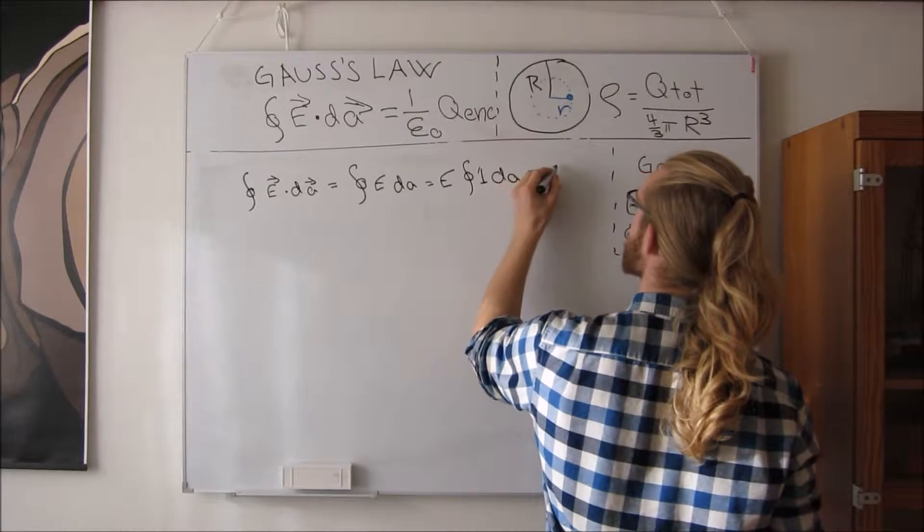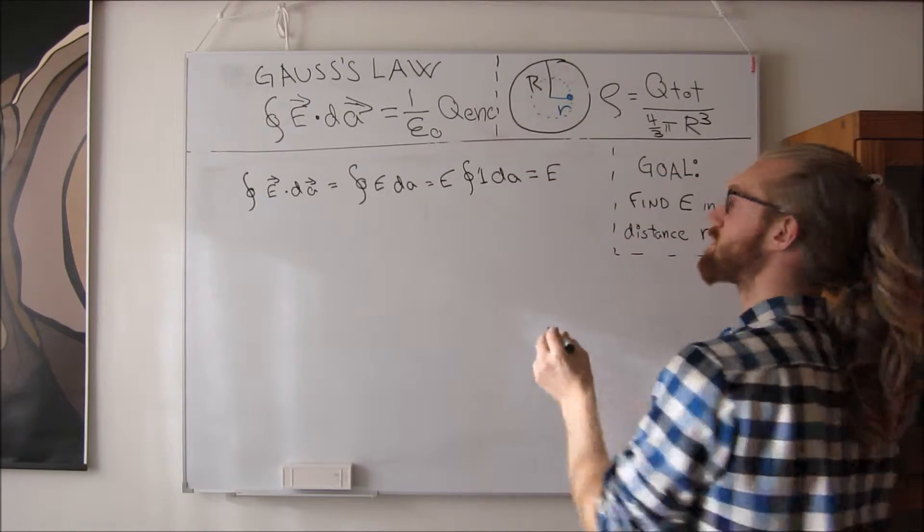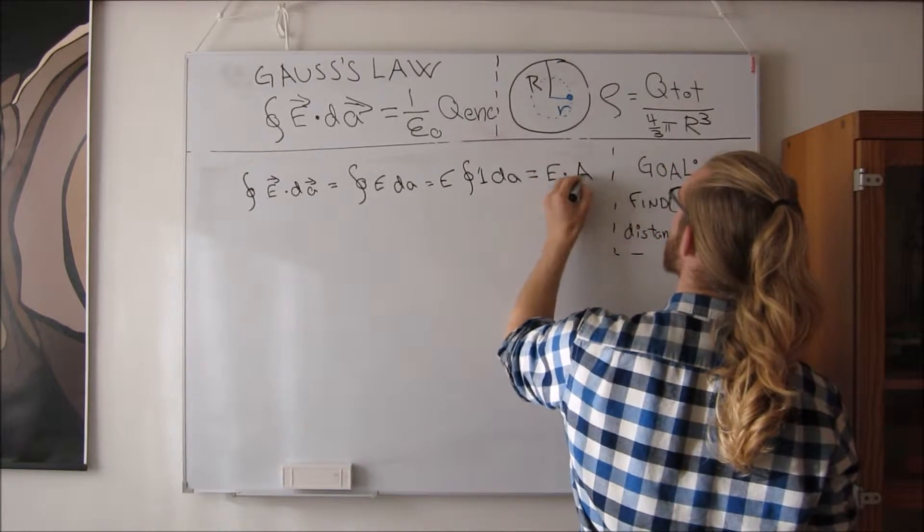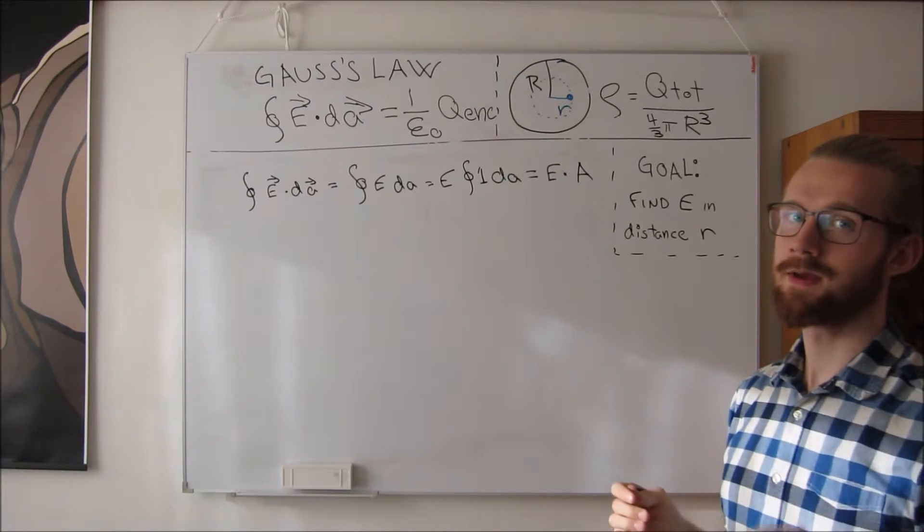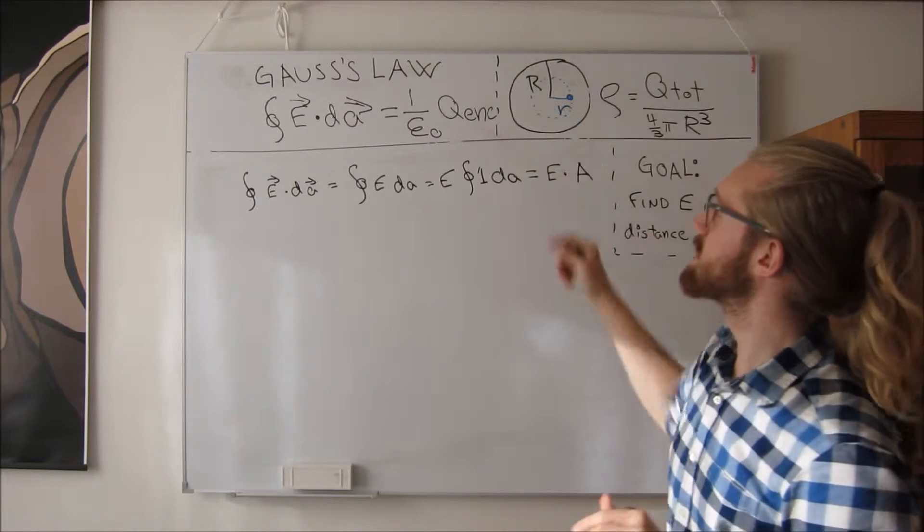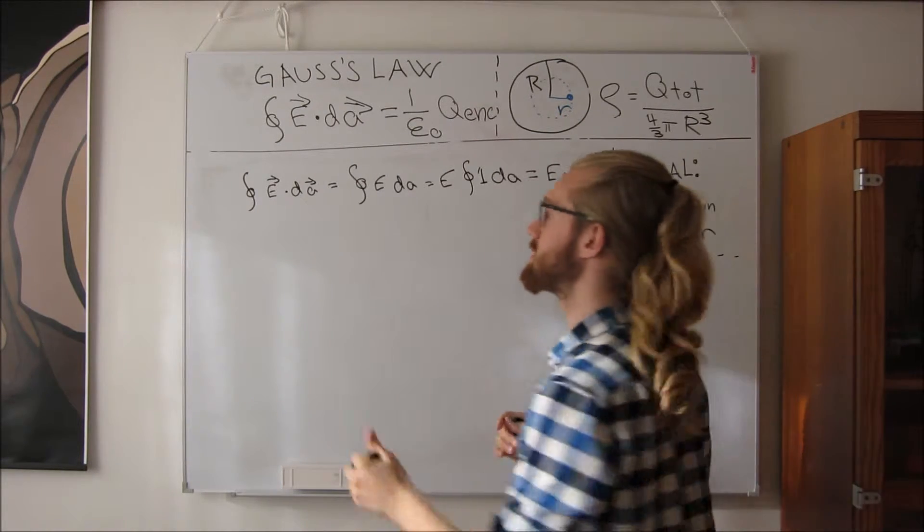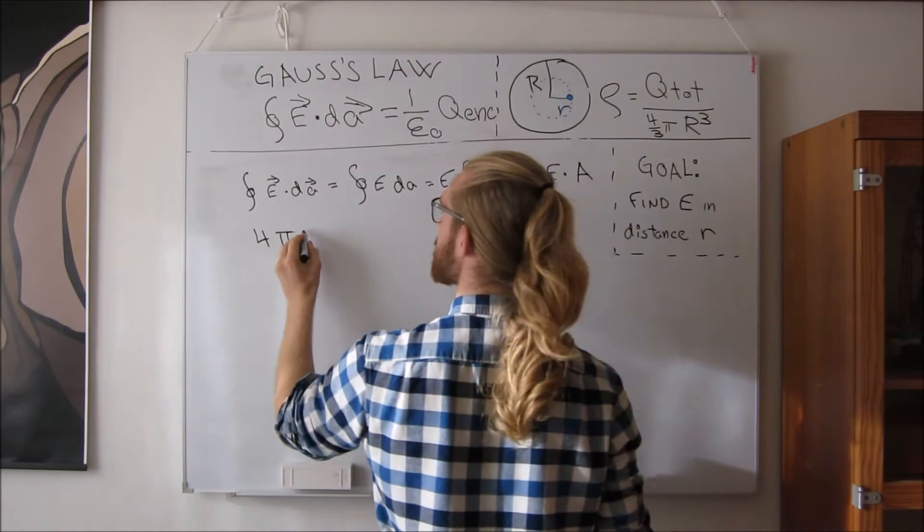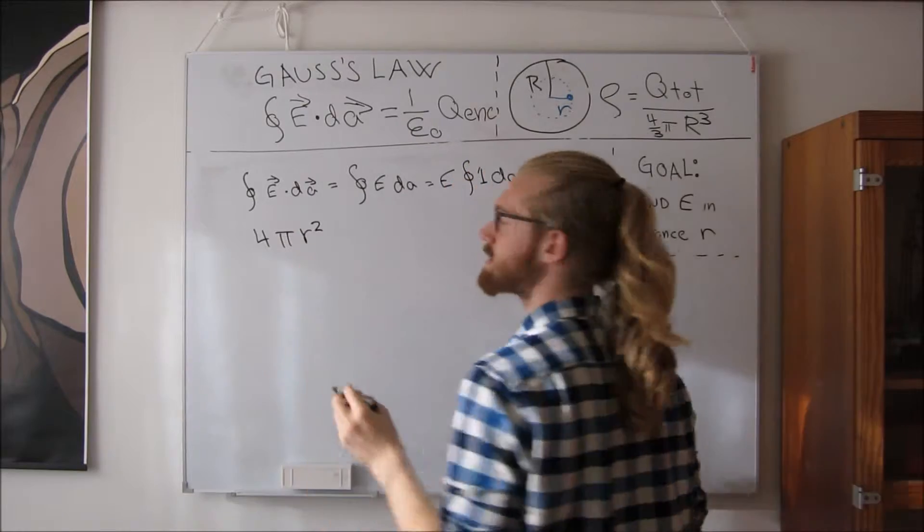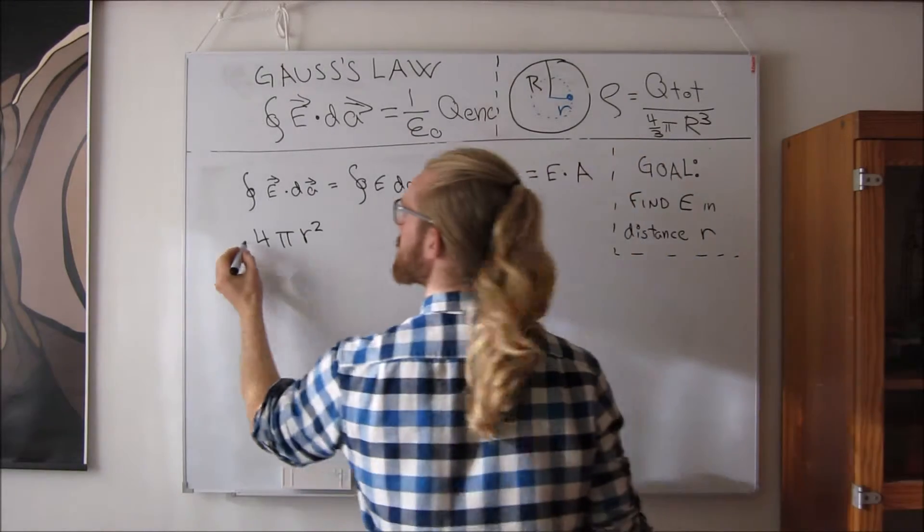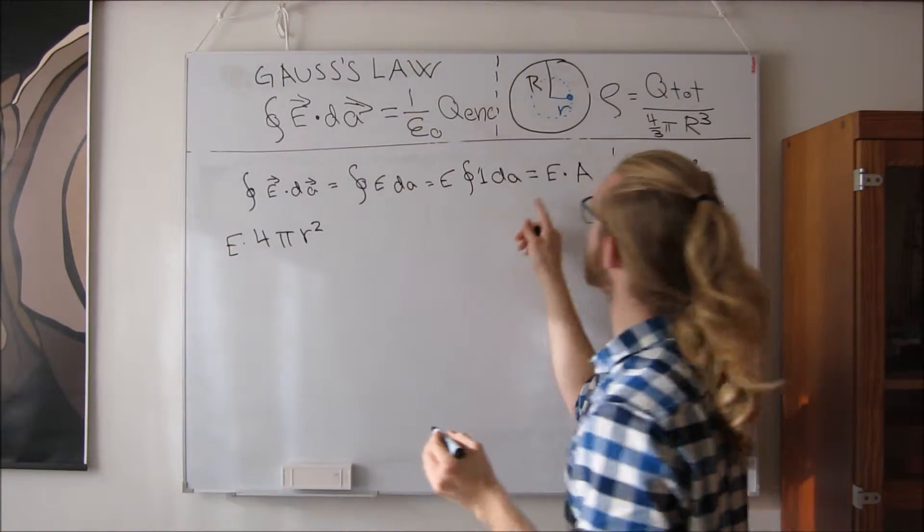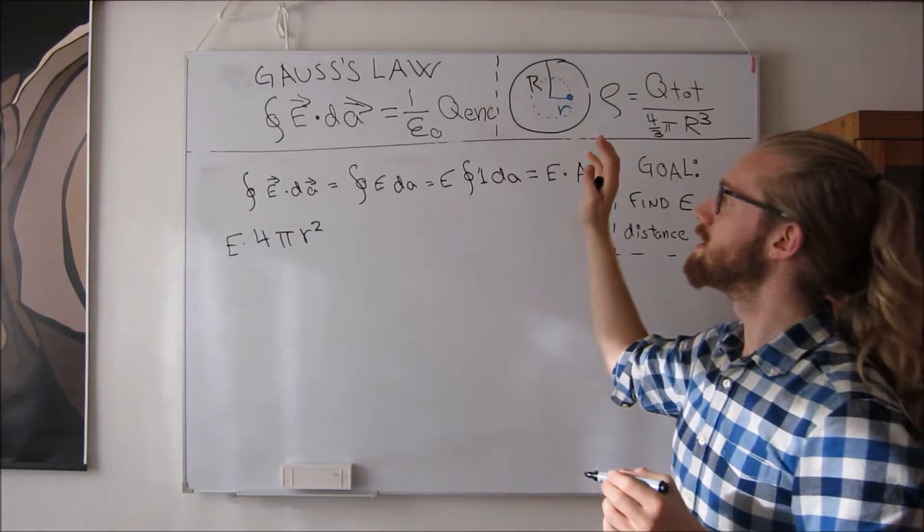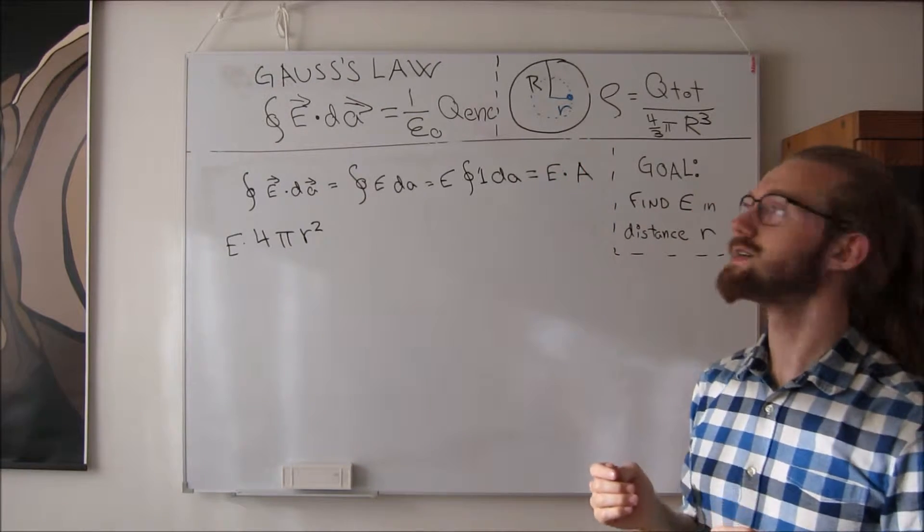We are left with the electric field strength and the area of this blue shell. The area of this blue shell is 4 pi r squared, multiplied with E. And now we consider the right-hand side of Gauss's law.